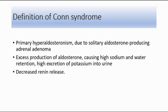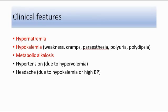The clinical features of Conn's syndrome — there are three main features: hypernatremia, which means high sodium level; hypokalemia, which means low potassium level, with signs and symptoms including weakness, muscle cramps, paraesthesia, polyuria, and polydipsia; and the third clinical feature is metabolic alkalosis. There are also other signs and symptoms like hypertension and headache.